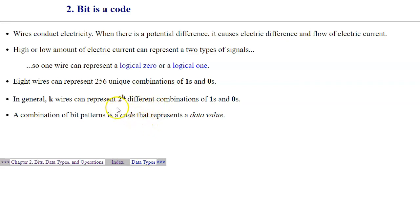In general, you can raise 2 to the k wires power. That would give you the number of different combinations. A combination of bit patterns is a code that represents a data value.